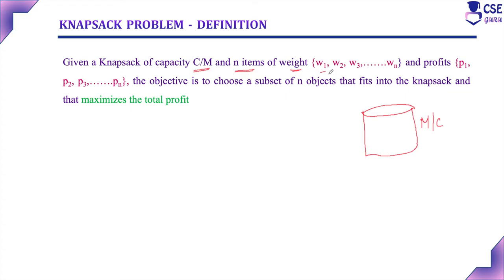N items with weights are given, represented by W1, W2, W3 up to WN, and profits are represented by P1, P2, P3 up to PN. The capacity of the knapsack, the number of items, the weight of each item, and the profit of each item are all given. The objective of the knapsack is to choose a subset of N objects.